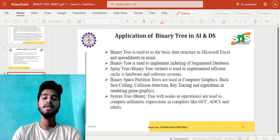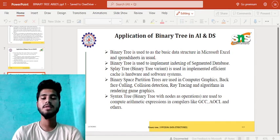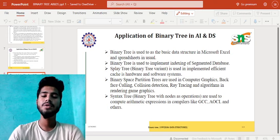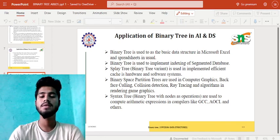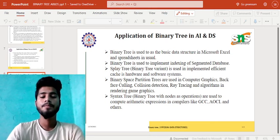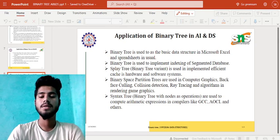Application tree is used as a basic data structure in Microsoft Excel and spreadsheets. Binary tree is used to implement indexing of segmented databases. Splay tree, a binary tree variant, is used in implementing efficient cache in hardware and software systems. Cache is a very fast but temporary storage device. Binary space partition trees are used in computer graphics: back face culling, collision detection, ray tracing, and algorithms in rendering game graphics. It is used in high-level graphics such as PUBG and similar games.